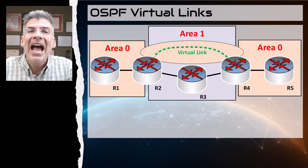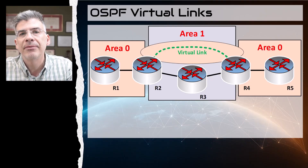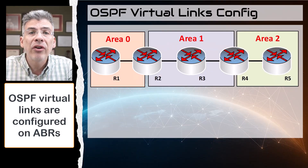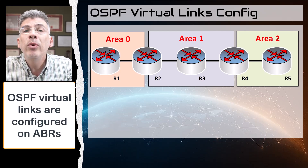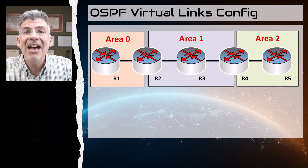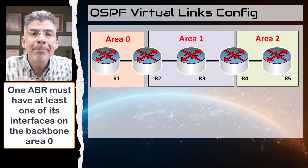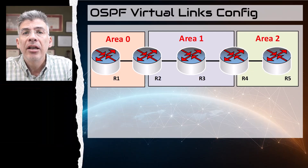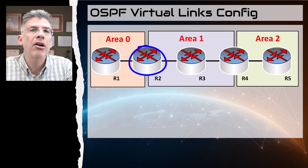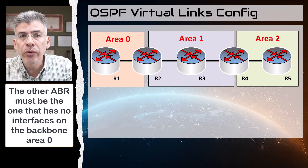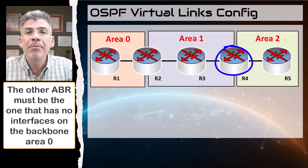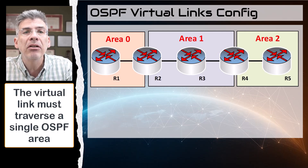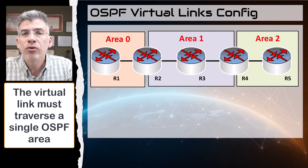Now let's take a quick look at how we can configure virtual links. The virtual link configuration must be applied on two ABRs with the following rules. The first ABR must have at least one of its interfaces in area zero — this is R2, which provides the connection to the ABR that is violating the rule. The second ABR must be the one violating the rule — in our case that's R4, which has no interface on area zero. Third, the virtual link must traverse a single area — in our case, the traversal area is area one.